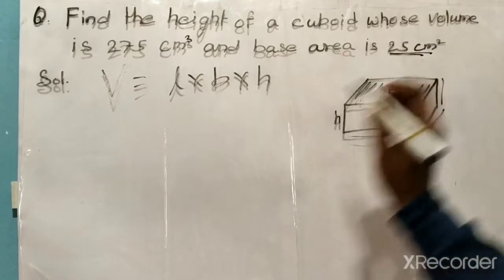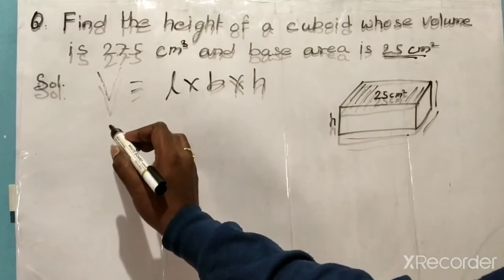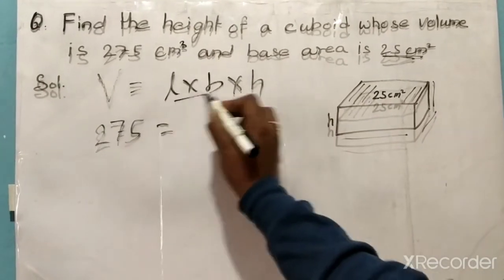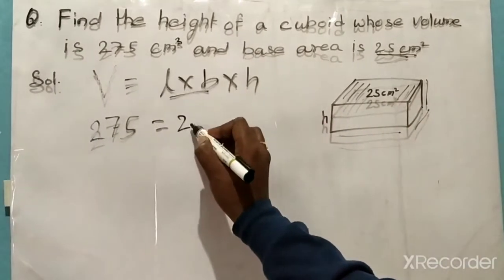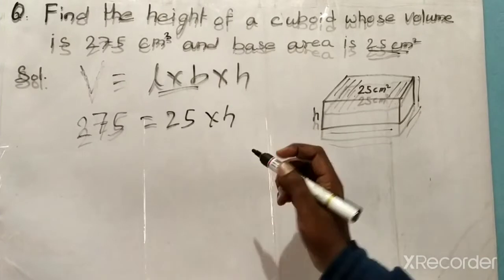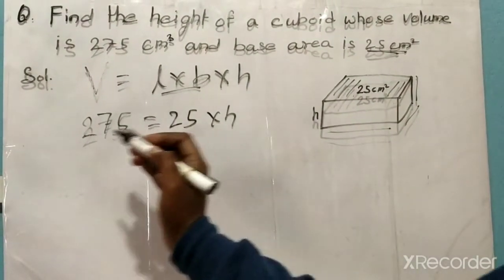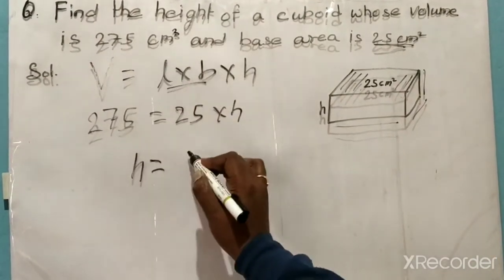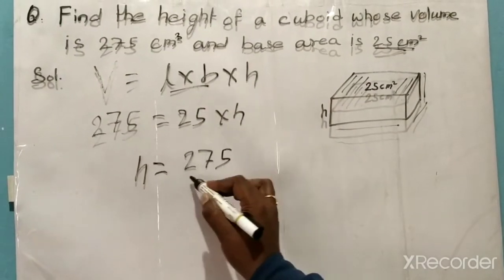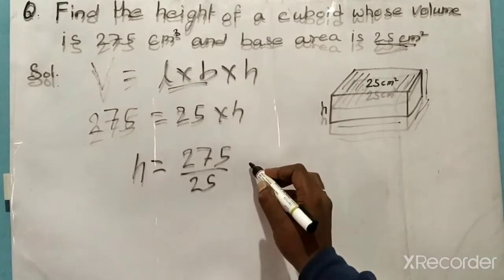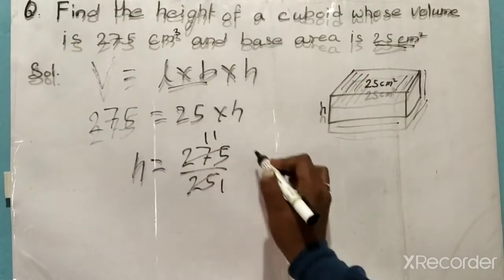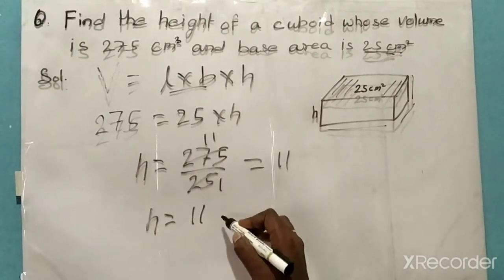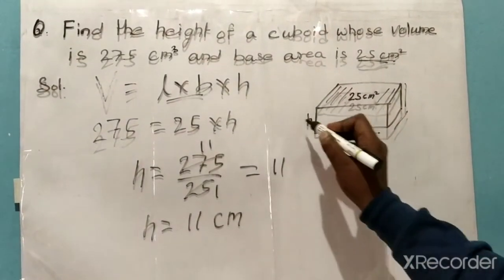Volume is given as 275 centimeter cube, so 275 is equal to length into breadth — that is 25 centimeter square — into h. Now we will bring 25 to this side; since it is multiplication here, it will become division, so h is equal to 275 divided by 25. On solving, h is equal to 11 centimeter. This is the answer.